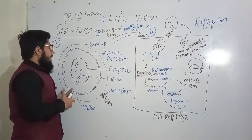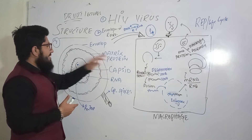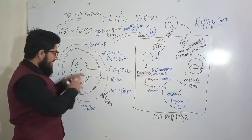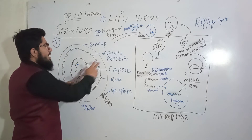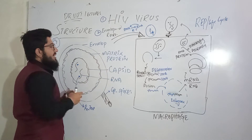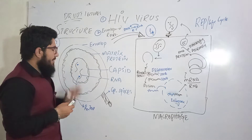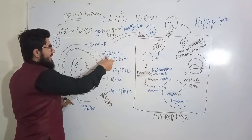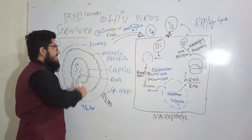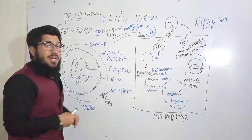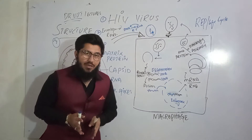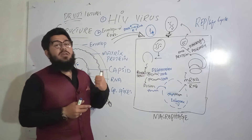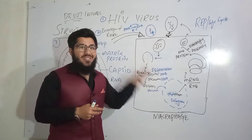The next layer is the matrix protein, which covers the entire nucleocapsid. It is again made up of protein. The third layer, covering both the capsid and the matrix protein, is named the envelope, which is made up of a lipid bilayer. This virus actually gets its envelope from the host cell.